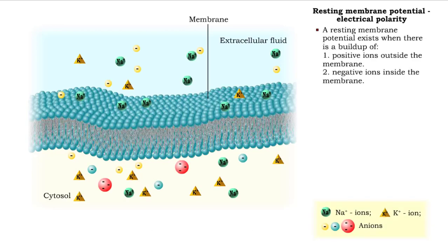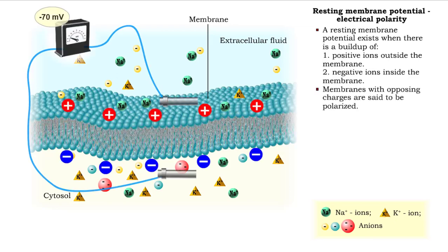A neuron's membrane, at rest, is positively charged on the outside and negatively charged on the inside. A membrane with opposing charges is known as a polarized membrane.